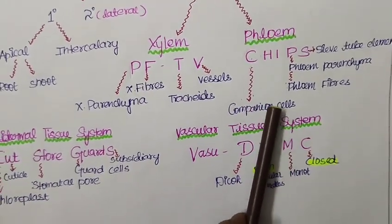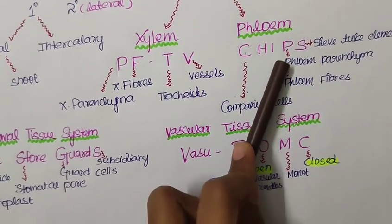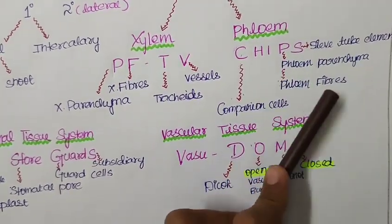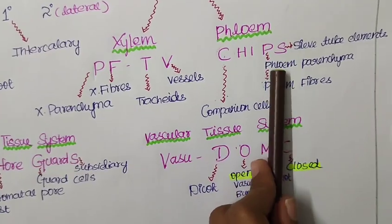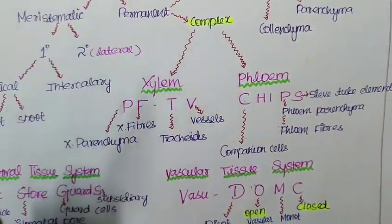Now to talk about the phloem, we have the short trick called CHIPS. Our favorite one. C for companion cells, P for phloem parenchyma and also fibers. And the next S stands for sieve tube elements. These are the short tricks under complex permanent tissue.